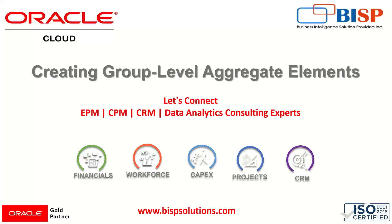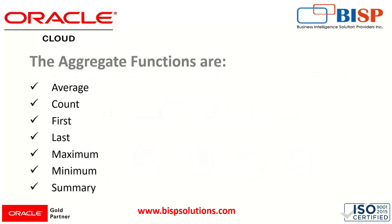Group level aggregate elements are predefined functions provided by Oracle. These are the aggregate functions available in Oracle Fusion or BI Publisher data model. We can use them in the data model editor page to perform operations like average, count, first, last, maximum, minimum, and summary.